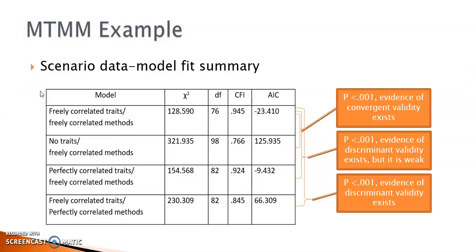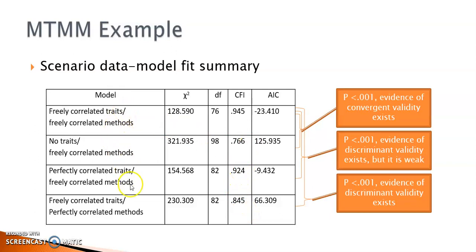The fit indices of the four models are summarized in a table. Because models two, three, and four are nested within model one, the comparison of model chi-square values shows that model one is significantly better than the other three models. The other fit indices are also better for model one than the three alternative models. You can see which comparison provides evidence about convergent validity and which ones provide evidence for discriminant validities.